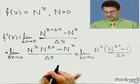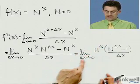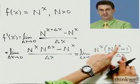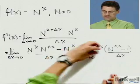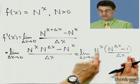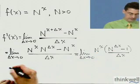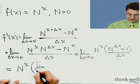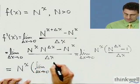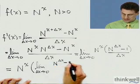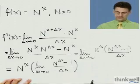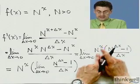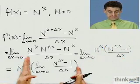Now here's something interesting I want you to notice. This term here has no Δx's in it at all—it's Δx free. So when I take the limit, this is not going to change. There are no Δx's; only Δx's go to 0. So what I can do is pull that out in front of the limit and say it's that number times the limit. I could write this as N^x multiplied by that limit: the limit as Δx approaches 0 of (N^Δx - 1)/Δx.